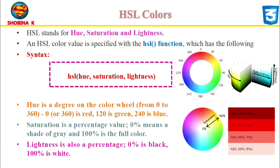Saturation refers to the vividness or colorfulness of the hue. A low saturation value leads to a muted hue, while a high saturation value leads to a brighter hue. Saturation is expressed as a percentage between 0% and 100%. 100% is fully saturated — more colorful and intense — while 0% is fully unsaturated gray. Lightness refers to how light or dark the hue is; the higher the value, the lighter the color. It represents the amount of light in the color and is expressed as a percentage between 0% and 100%. For lightness, 50% is the normal setting, while 100% is white and 0% is black.